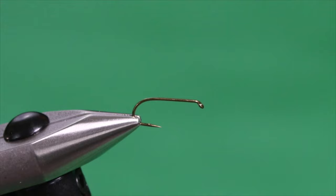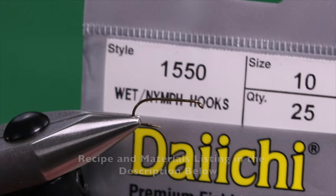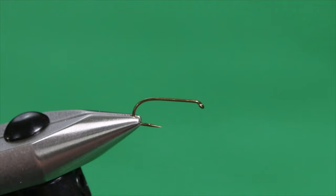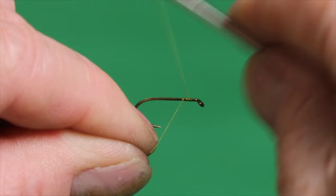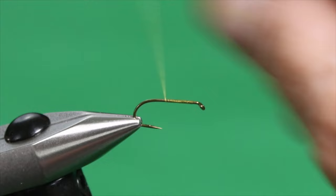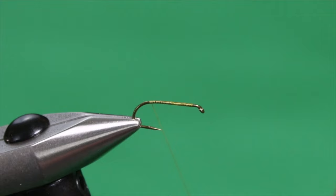I'm going to tie this on a Daiichi 1550 number 10. And for my tying thread, I'm going to use Semperfli Classic Waxed 8-0 in Pale Olive. Olive thread would be good. You could even use red thread if you wanted. It really doesn't show much on the finished fly. So we're going to get our thread wrapped, our basic wrap, all the way down the shank, like so, right before it falls off.